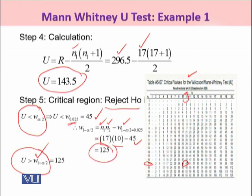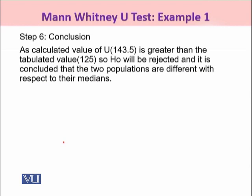You subtracted 0.025 from 1, and here you first put n1 as 17, n2 as 10, and W(alpha/2) which had a value of 45. So W(1-alpha/2) is being calculated as 125. So students, the criteria you have is basically this: if your calculated value is less than 45 or greater than 125, you will reject the null hypothesis.